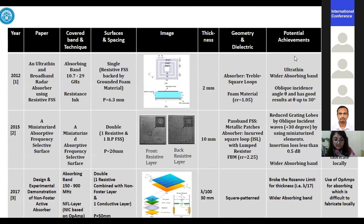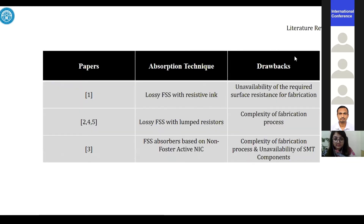The current state of the art table shows different techniques along with their drawbacks and advantages. In the literature review, we can see that lossy FSS using resistive sheets have drawbacks in that they are not widely available locally, there is complexity in the application process, and absorbers based on non-prospective materials are difficult to control and handle as they are applied externally.